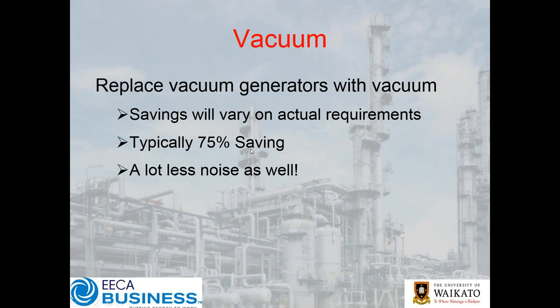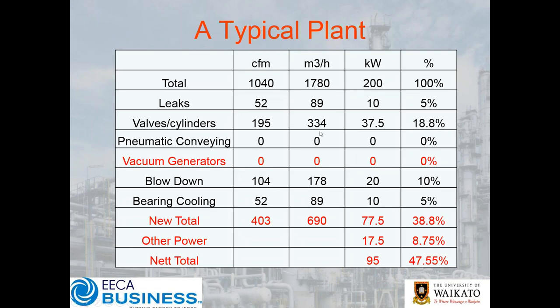Let's take a minute to talk about vacuum. There are plenty of compressed-air-driven vacuum generators on the market. As a typical rule of thumb — depending on the level of vacuum you need to generate — your typical savings are in the order of 75%. The added bonus with new health and safety legislation is you may be able to sell this on safety grounds: you've got a high level of ambient noise and the best thing you can do is drop that noise. What we're going to do is eliminate compressed air being used to generate vacuum and introduce a dedicated vacuum system — you'll notice air use drops substantially, with a minor increase of 5 kilowatts in other power used.